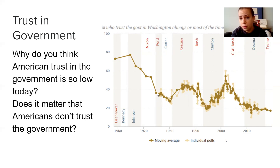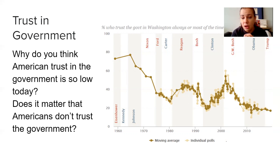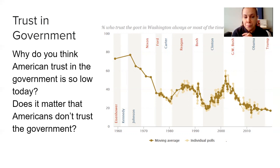This decline continues with President Ford who takes over, and again continues with President Carter. It resurges a little bit with Reagan, and a little bit with George W. Bush — that small peak is partially a result of what happened with 9/11. Then during Obama's presidency and leading into Trump, it is at an all-time low of about 20%. In just about 60 years the general public has gone from 70% trusting the government to about 20% — an insane drop in terms of those who trust the government.